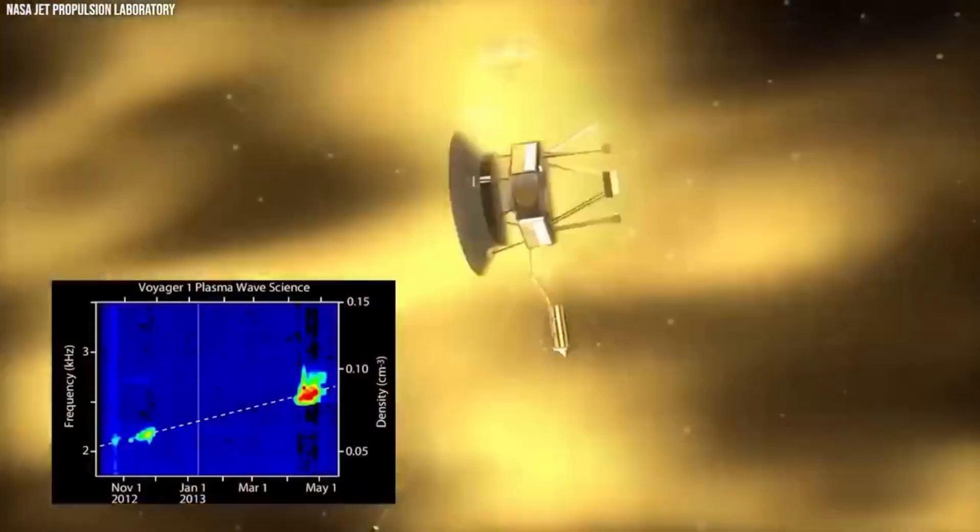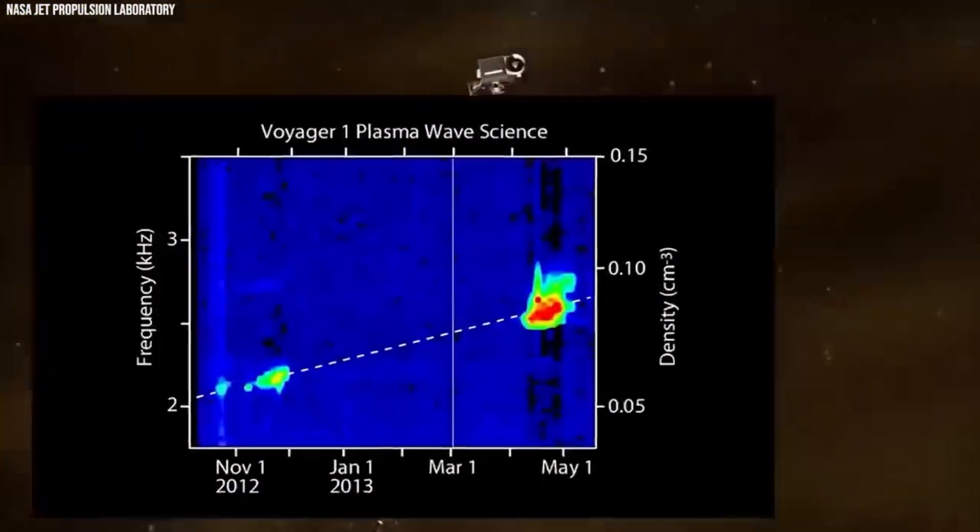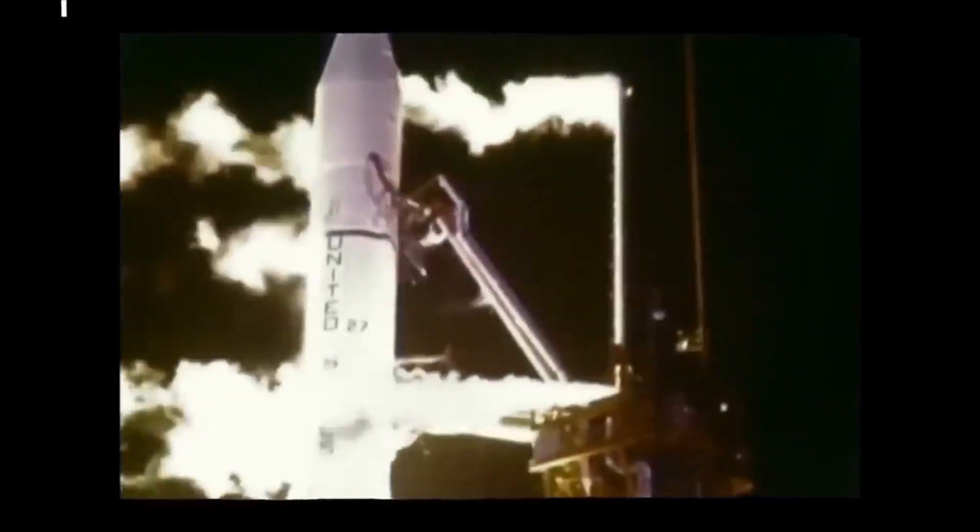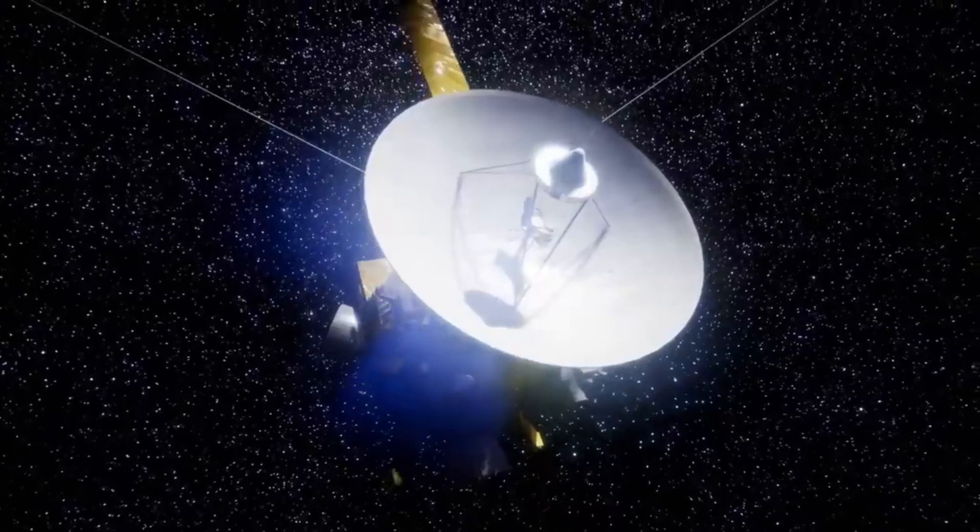Voyager 2 in particular achieved several remarkable milestones during its voyage. In 1986, the Voyager spacecraft made history as the first to fly by Uranus. Three years later, it achieved another milestone by flying by Neptune, making it the only spacecraft to have done so.